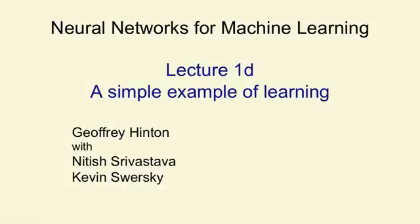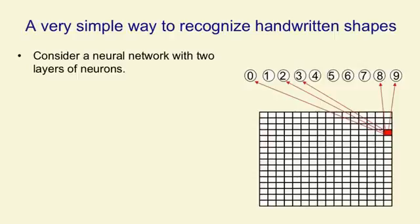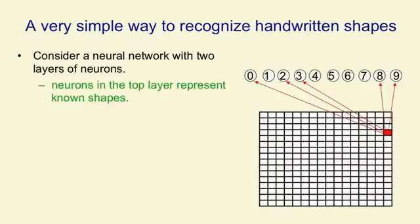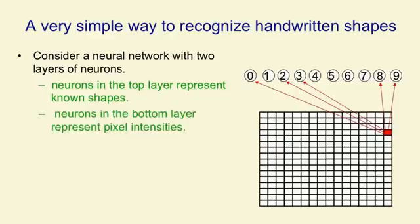We're going to look at a very simple learning algorithm for training a very simple network to recognize handwritten shapes. The network only has two layers of neurons. It's got input neurons, whose activities represent the intensities of pixels, and output neurons, whose activities represent the classes. What we'd like is that when we show it a particular shape, the output neuron for that shape gets active.